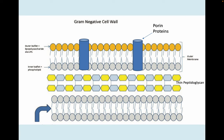Here's another model of the gram-negative cell wall. At the very bottom is the cell membrane with the phospholipid bilayer. Above that is a very thin layer of peptidoglycan. The space from one membrane to the next is the periplasmic layer. The outer membrane has phospholipids on the inner leaflet, while the outer leaflet is made up of lipopolysaccharides. This outer membrane also contains porin proteins that help move things across the membrane.